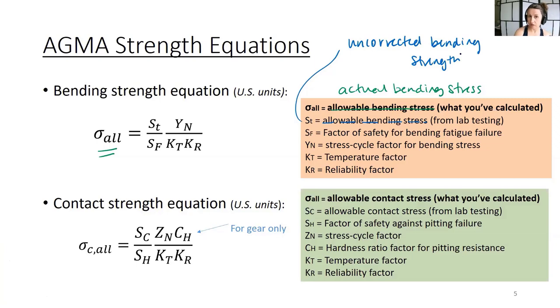So ST is also called the allowable bending stress. In my perfect world, it would not be called that because that's not really describing what it is. I think I would call this something like the uncorrected bending strength. But that's not what it's called in Shigley. What it is, is it really is that lab tested value for strength that hasn't been corrected for some other factors. So by uncorrected, we mean that its strength value is tested at 10 million cycles at room temperature at 99% reliability. But just like we did with fatigue analysis, we need to correct this lab tested strength value to match up with our real life situation. So we need to correct for the actual number of cycles, actual temperature, and the desired reliability. So that's what these other factors are, and think of them as correction factors.